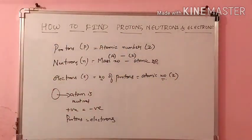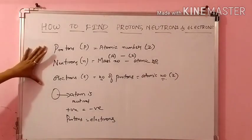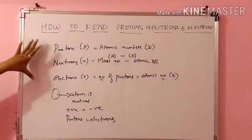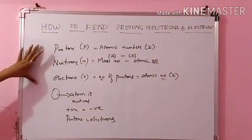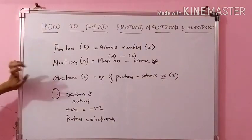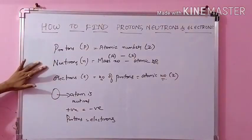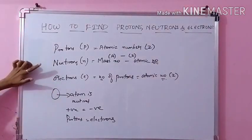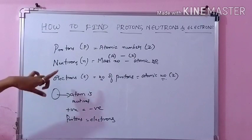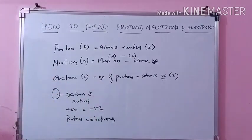So now you have the three formulas. Protons and electrons will always be the same — equal to the atomic number. For neutrons, you subtract mass number minus atomic number.